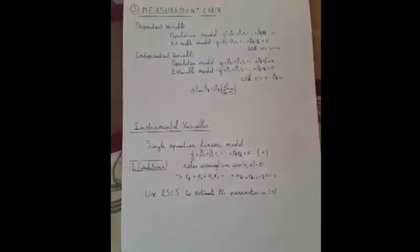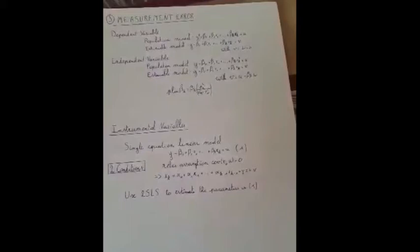A measurement error in the independent variable will lead to inconsistent OLS estimates if the measurement error is correlated with the observed variable. The population model is given by the first equation and the estimable model is given by the second equation. The probability limit of the coefficient and the affected variable xk is splim beta hat k, with sigma square r, the error variance from a linear regression of xk star on x1 to xk-1 and an intercept.